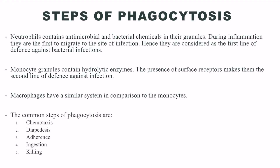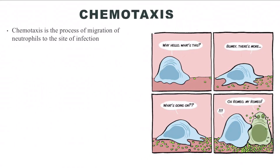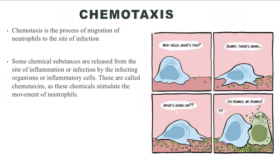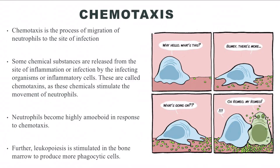Now let us explore the five steps of phagocytosis. Step one: Chemotaxis. With the entry of foreign organisms into the body, some chemicals called chemoattractants or chemotaxins are generated by the inflammatory cells or the invading organisms. Complement proteins like C5A and C3 can also act as these chemicals. Chemotaxins attract the neutrophils towards the damaged site. The migration of neutrophils to the site of infection is termed as chemotaxis.